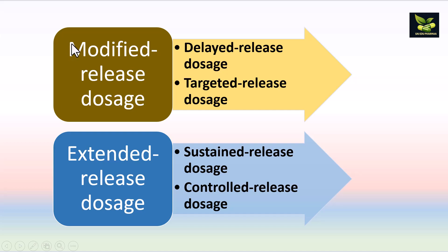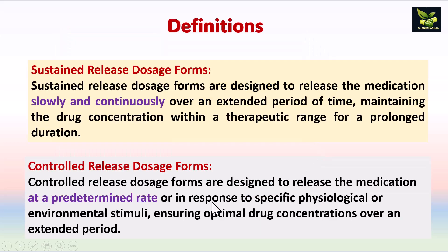Broadly, these are classified as modified release and extended release dosage forms. Modified release includes delayed release and targeted release, and also prolonged release. Extended release includes two terms: sustained release and controlled release. Sustained release is designed to release medication slowly and continuously over an extended period, maintaining drug concentration within the therapeutic range for a prolonged duration. Controlled release dosage forms are designed to release medication at a predetermined rate using various mechanisms, in response to specific physiological or environmental stimuli, ensuring optimal drug concentration over an extended period.